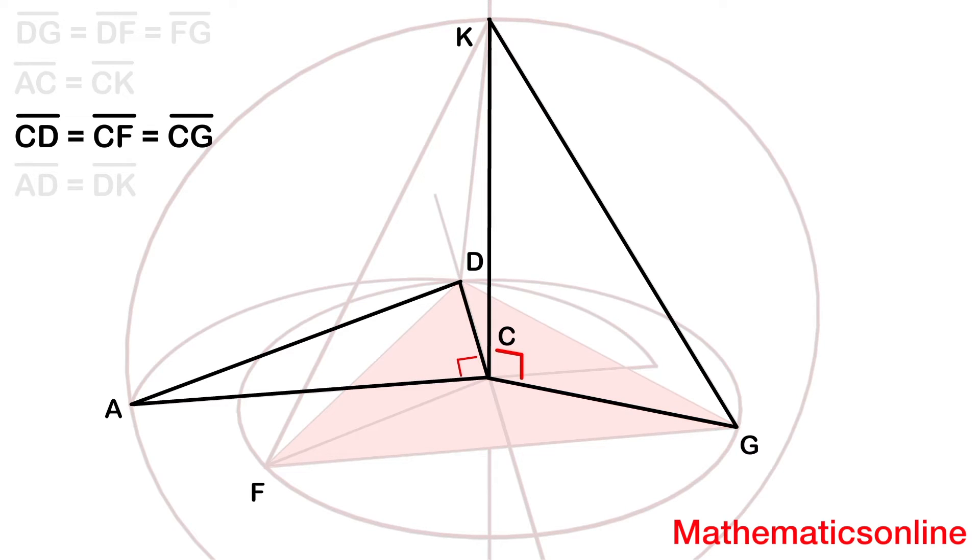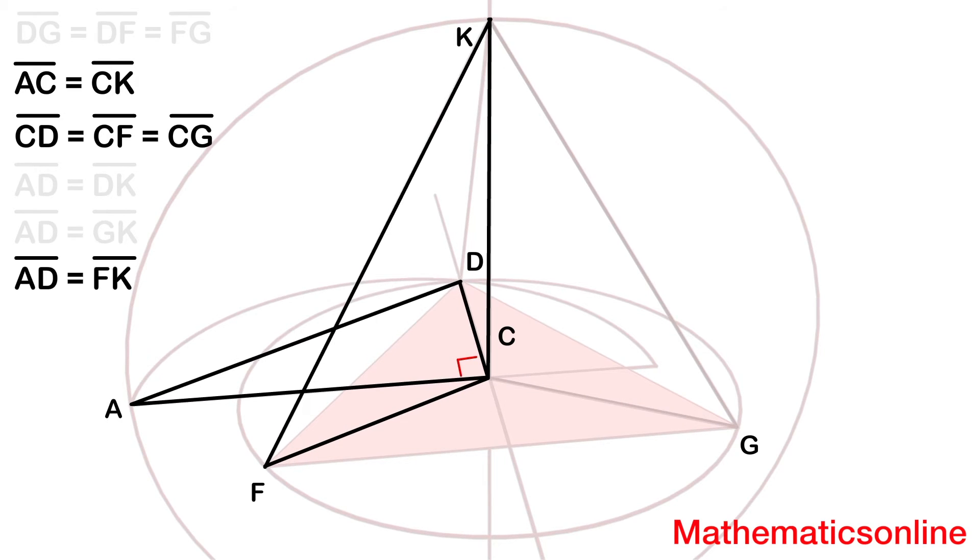Also these two other triangles are also congruent, therefore AD is equal to GK. And these two triangles are congruent, therefore AD is equal to FK.